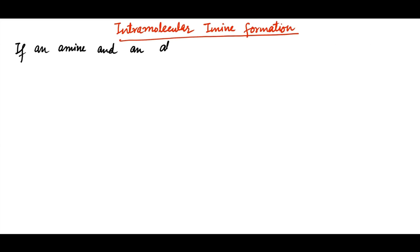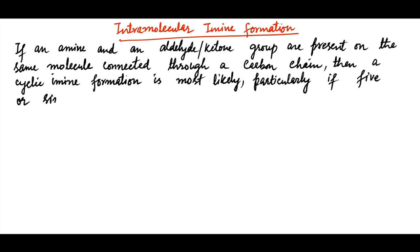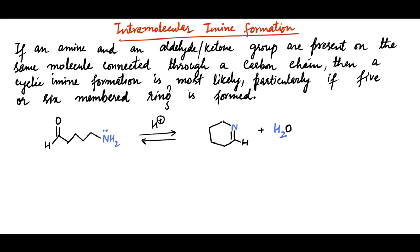If an amine and an aldehyde or ketone group are present on the same molecule connected through a carbon chain, then a cyclic imine formation is most likely, particularly if a five- or six-membered ring can be formed. Consider, for example, the formation of this cyclic imine in the presence of acid catalyst. To understand the formation, let us denote the carbons starting from carbonyl carbon as C1, C2, C3, C4, and C5, which is bonded to NH2.